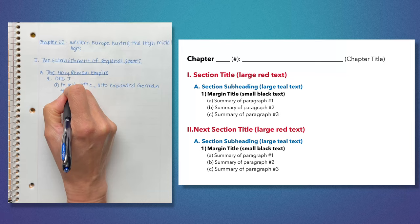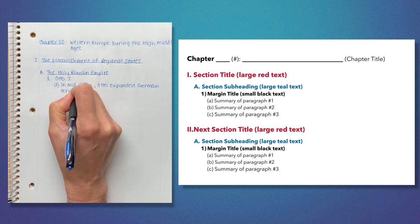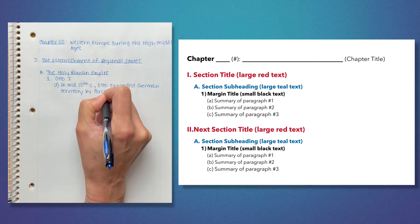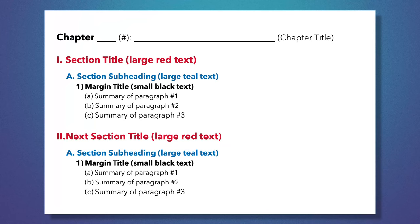Outlining may seem like a daunting task at first, but with practice you will become more efficient. I can't stress enough how important it is to read a paragraph first and then go back for a second read to begin the process of synthesizing information. This will help you commit the information to memory. When outlining a textbook, I prefer to use an alphanumeric system, meaning a combination of letters and numbers. For example, I would use Roman numerals for the chapter's main section titles, and capital letters for each subsection.